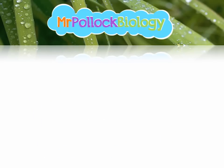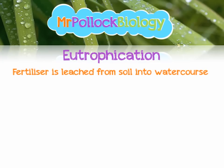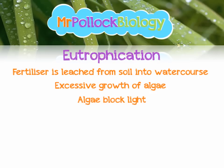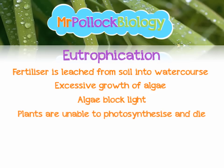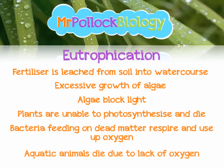One way humans are affecting the nitrogen cycle is by using nitrogen-rich fertilisers on crops. This can lead to eutrophication, where excessive fertiliser is leached from the soil into a watercourse during excess rainfall, washing into rivers and ponds. This causes excessive algae growth, which cuts off light so aquatic plants can't photosynthesise and die. This results in a lot of decomposer activity, which uses up oxygen, and with less oxygen everything dies — aquatic animals and plants. It's just not a pleasant place to be.